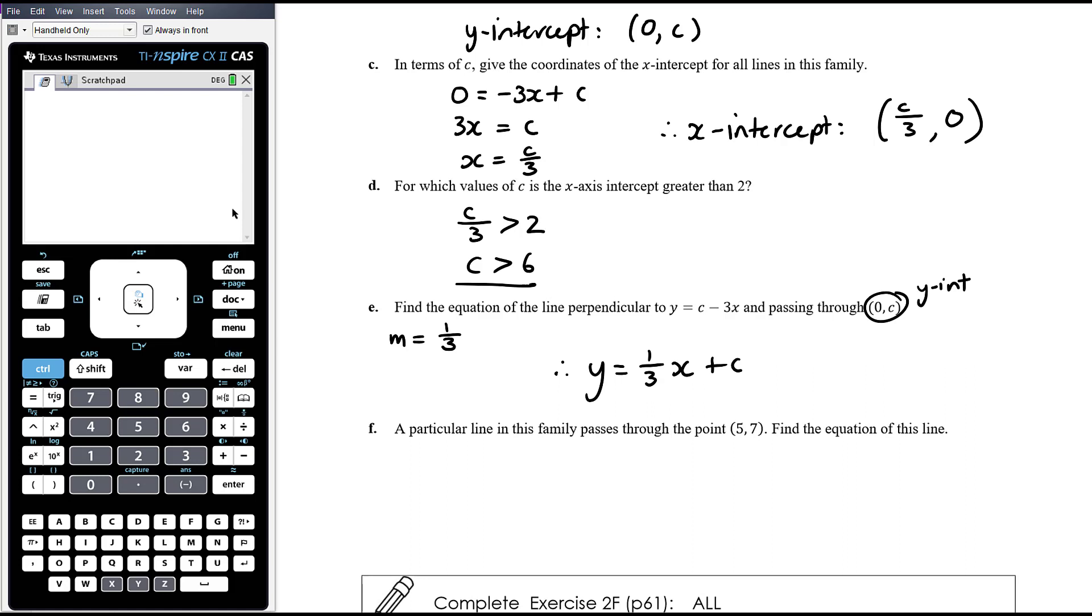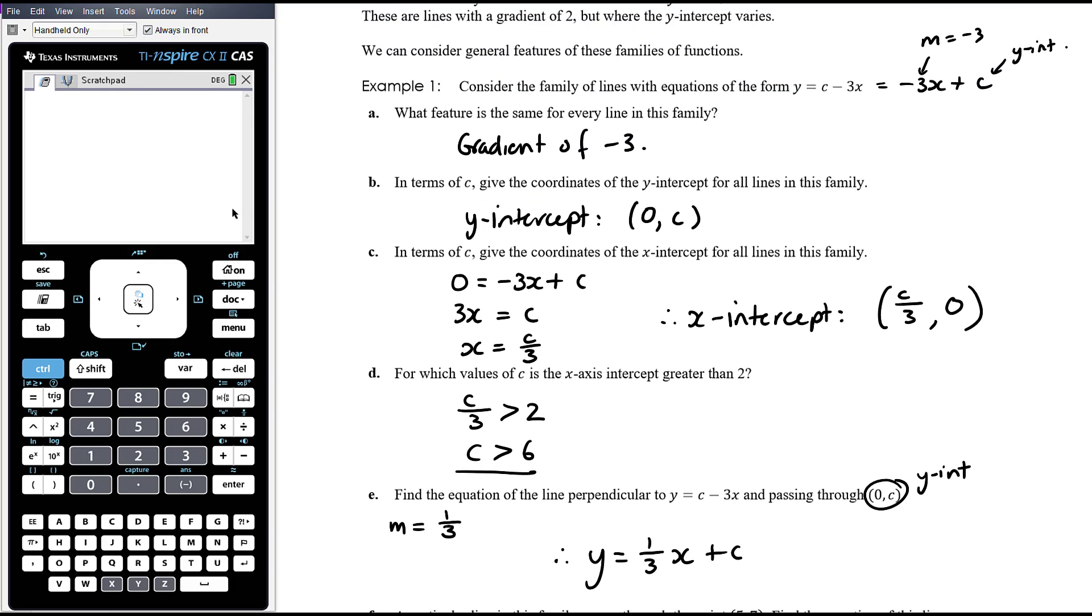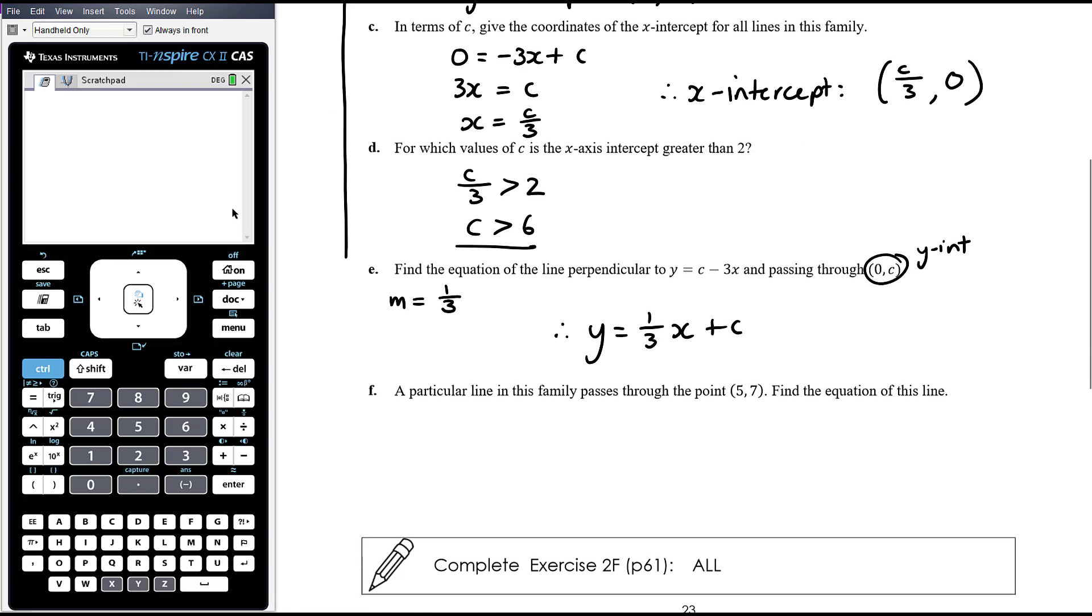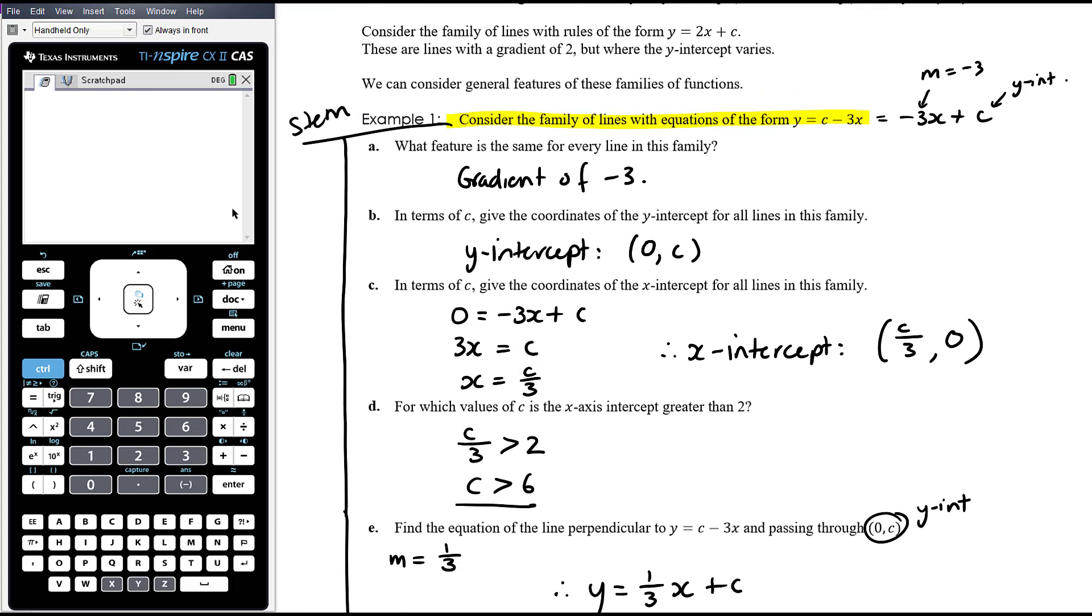A particular line in this family passes through the point 5,7. Now sorry, this question is a little unclear. Let's talk about structure of a question. This sentence up here, that's the stem. That applies to everything that comes after it. So every single question should be read as, Consider the family of lines with equations of the form y equals c minus 3x. What feature is the same for every line in this family? Consider the family of lines with equations of the form y equals c minus 3x. In terms of c, give the coordinates of the lines of this family. So part f here.